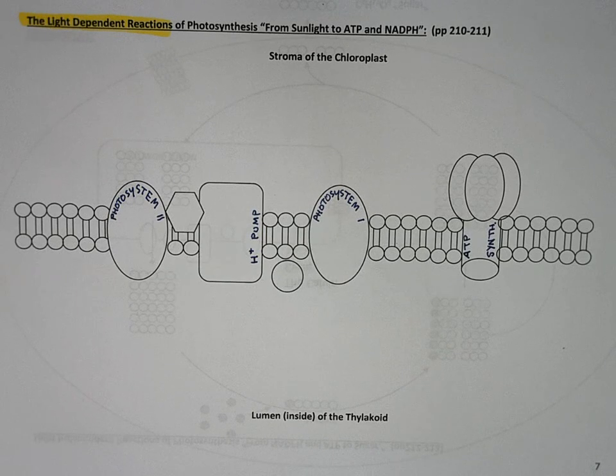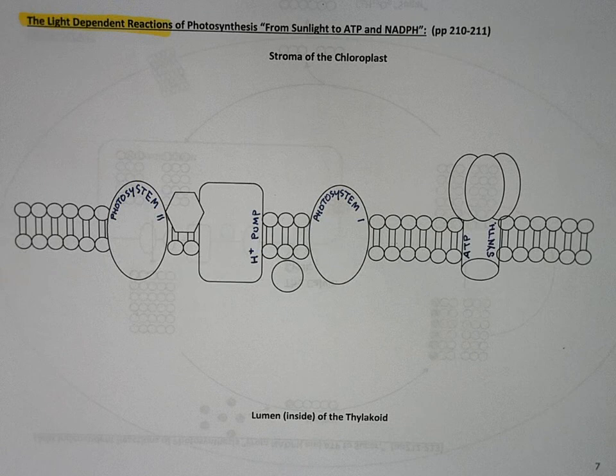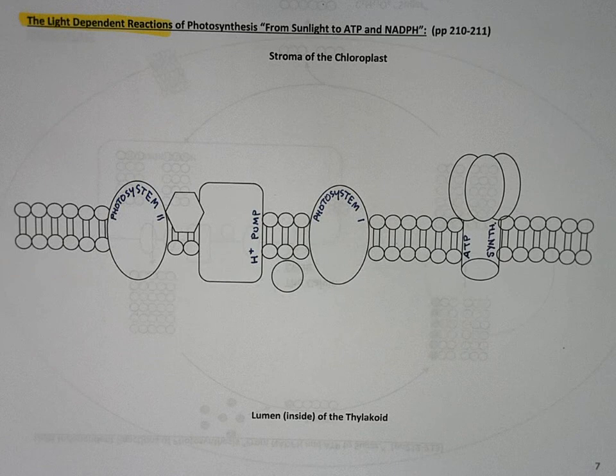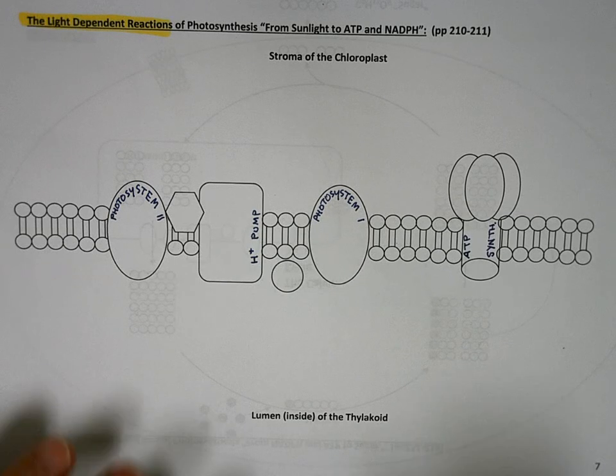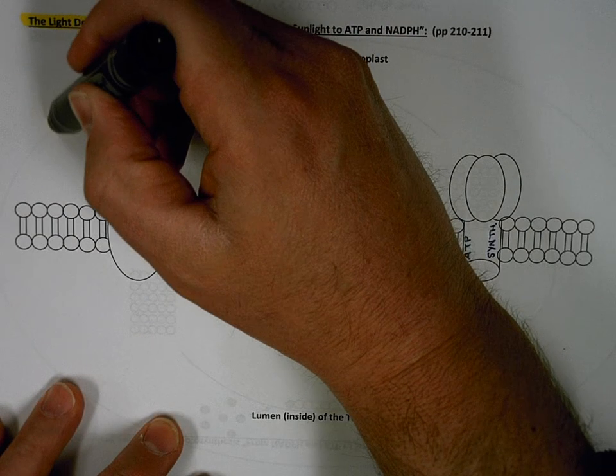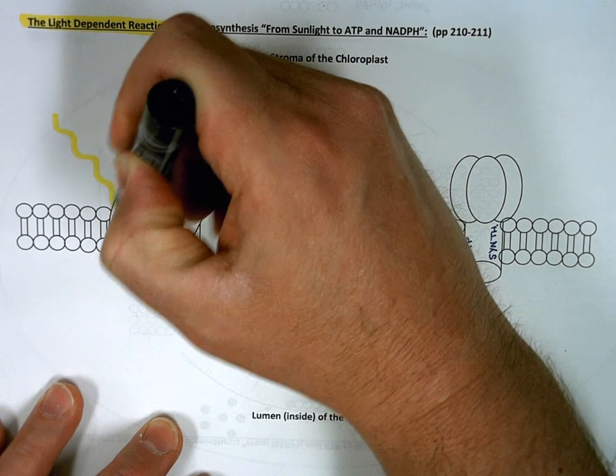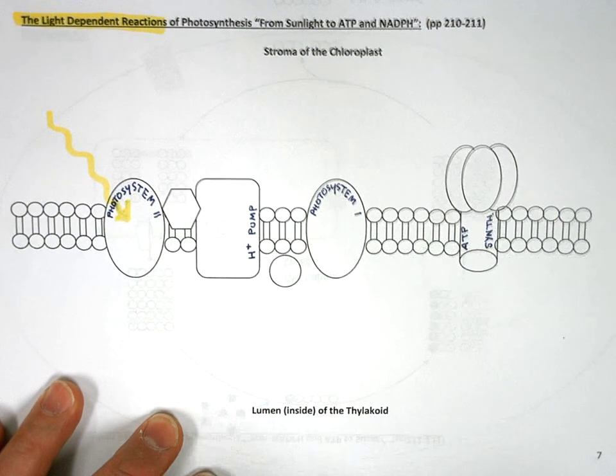I guess our story should begin considering we're talking about photosynthesis and the fact that these are the light-dependent reactions of photosynthesis with sunshine or light. I'm going to draw it with this yellow marker here going like this and saying light comes down, strikes photosystem two.